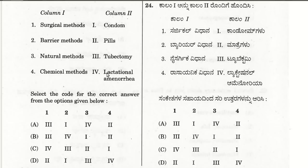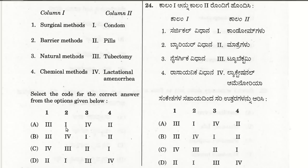The surgical method is tubectomy. The barrier method is by condom. The natural method is by lactational amenorrhea. The chemical method is by the corresponding option. The right choice for the twenty-fourth question is C, where surgical method is tubectomy, barrier method is condom, natural method is lactational amenorrhea, and chemical method is the chemical contraceptive.